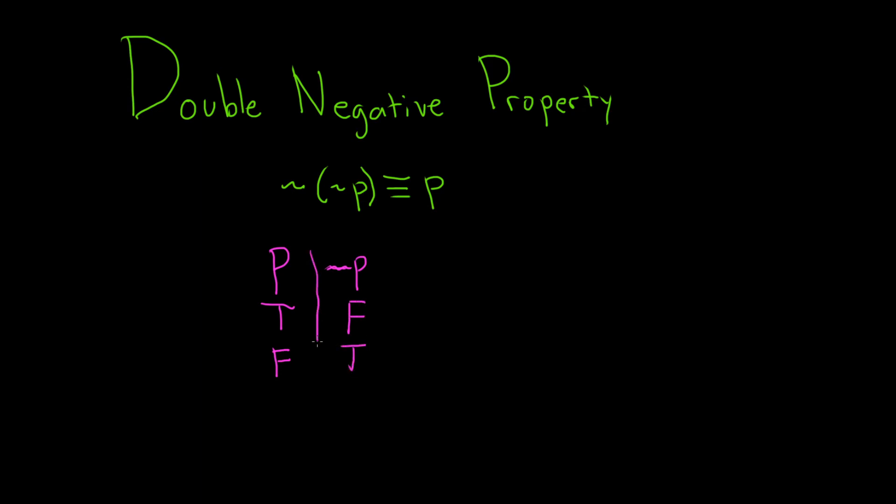Go ahead and put my little line here. And then we can look at not not P. That's the negation of not P. So in this case it's false, so it becomes true. And in this case it's true, so it becomes false.